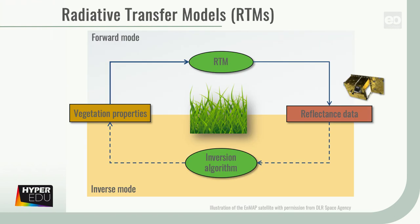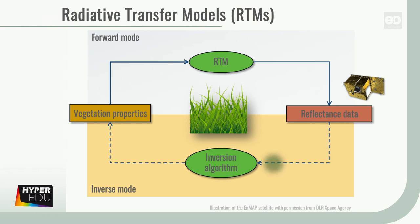As compared to the two statistical approaches just described, the last quantification method I would like to present, the Radiative Transfer Models or RTMs, are physically-based descriptions of the interaction of light with the atmosphere, water, or land surface. They are often used to model vegetation canopies, as shown in this example. In the forward mode, the RTM is built to simulate vegetation reflectance. Afterwards, the model can be used in the inverse mode to estimate biophysical and biochemical vegetation properties on the basis of the acquired images.